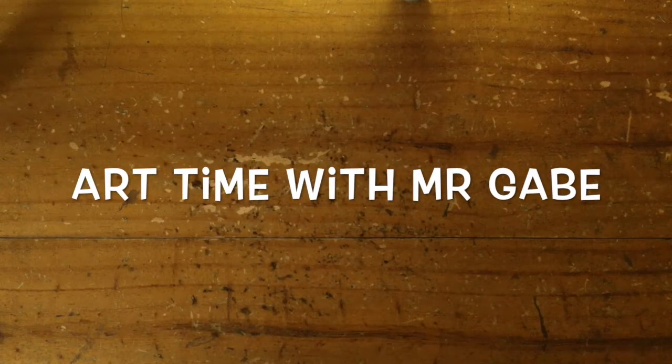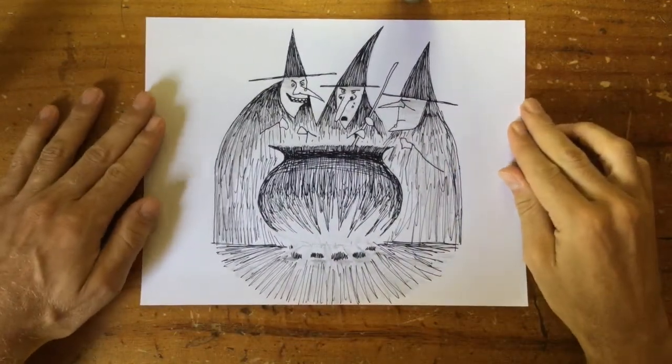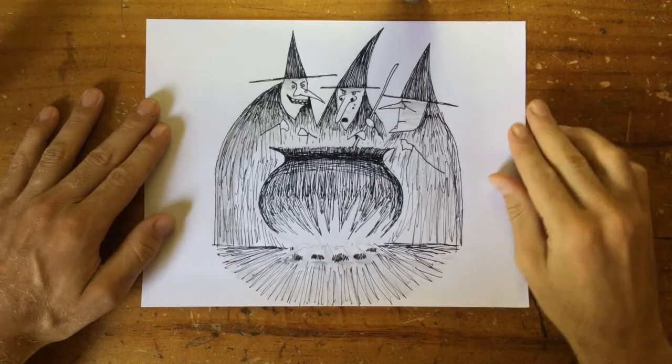Hello fourth grade, welcome along, it's time for art. This week we're going to be drawing a picture of three mean witches with their bubbling cauldron.